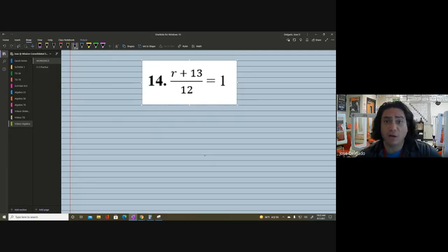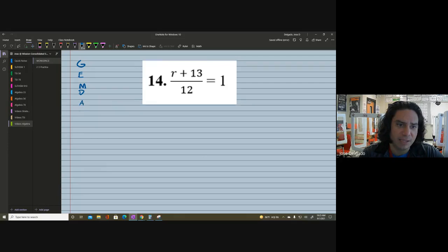We got R plus 13 divided by 12 equals to 1. We need to solve this. We need to work backwards. We are going to use the order of operations. We're going to use GEMDAS. And remember, I talked about this. GEMDAS is for parentheses, right?